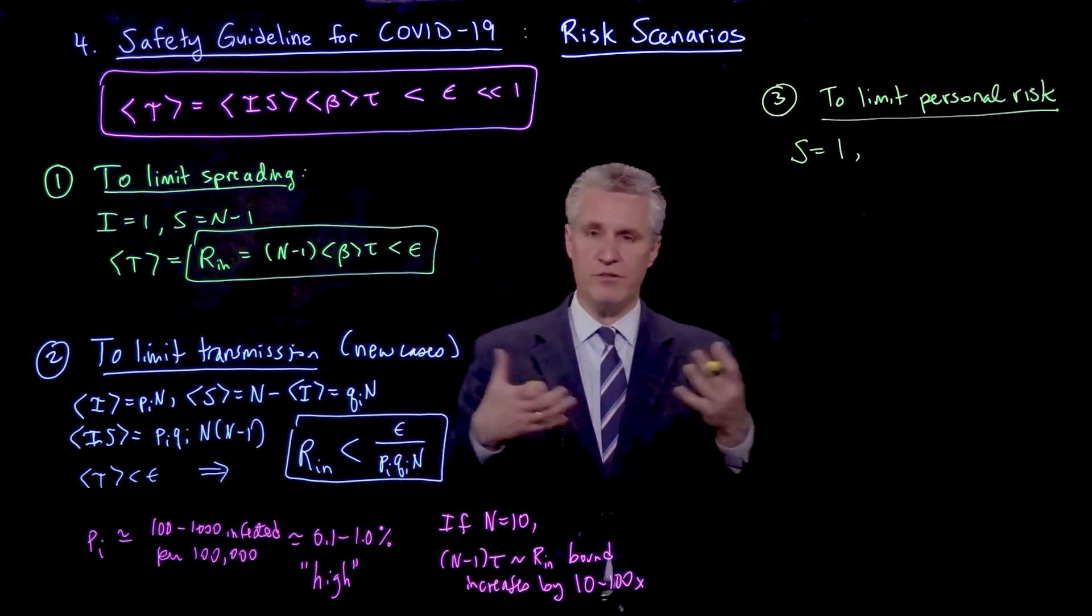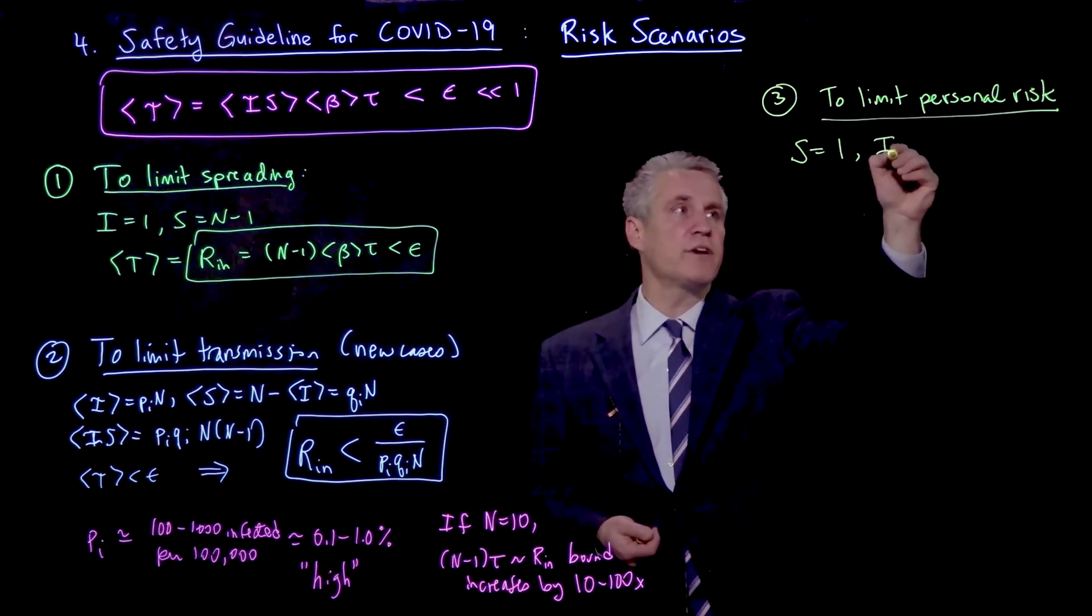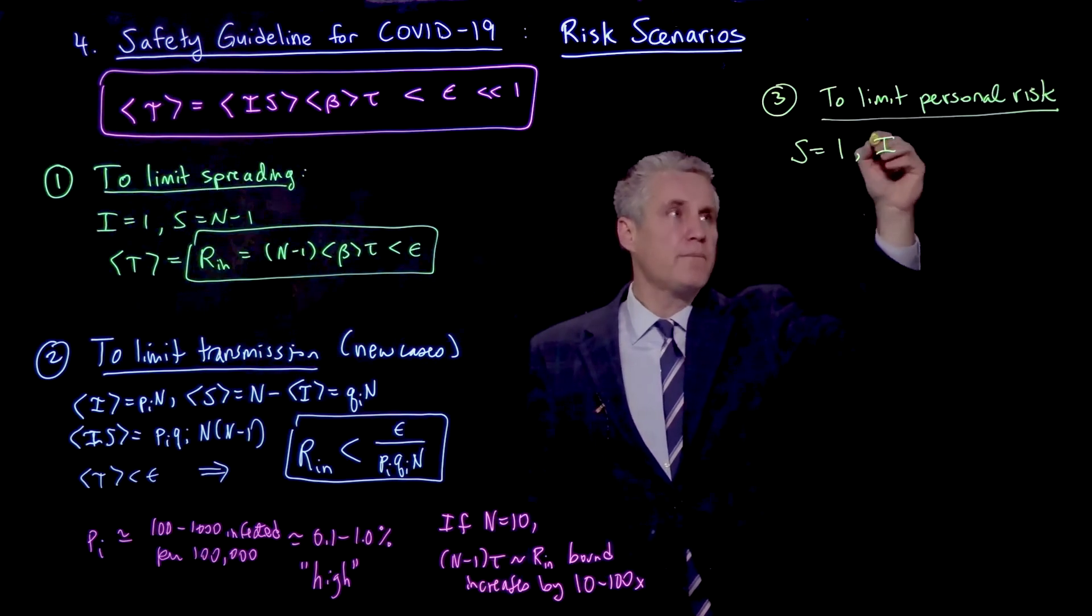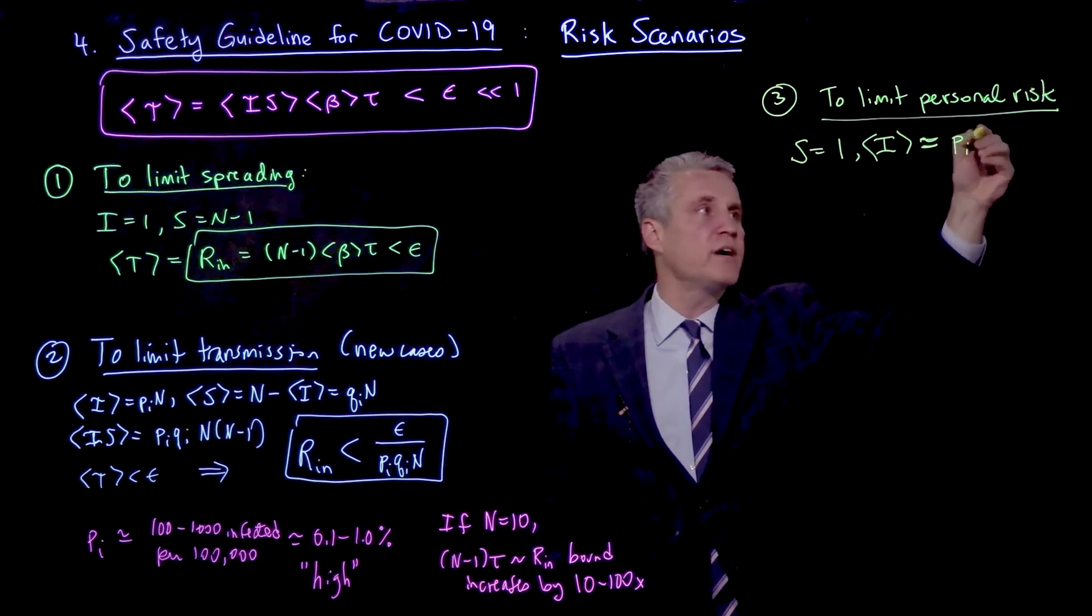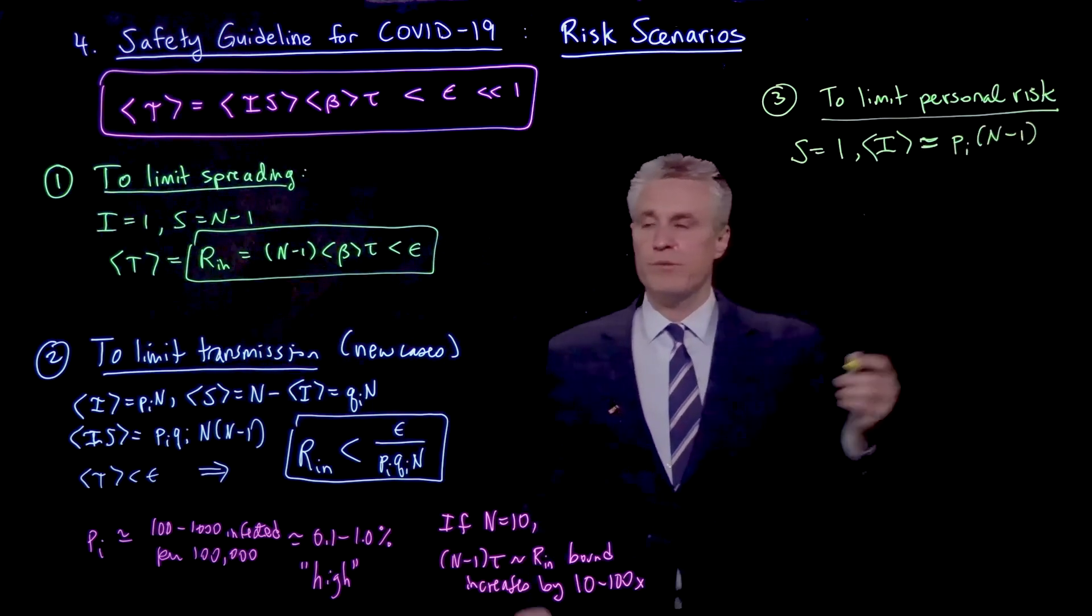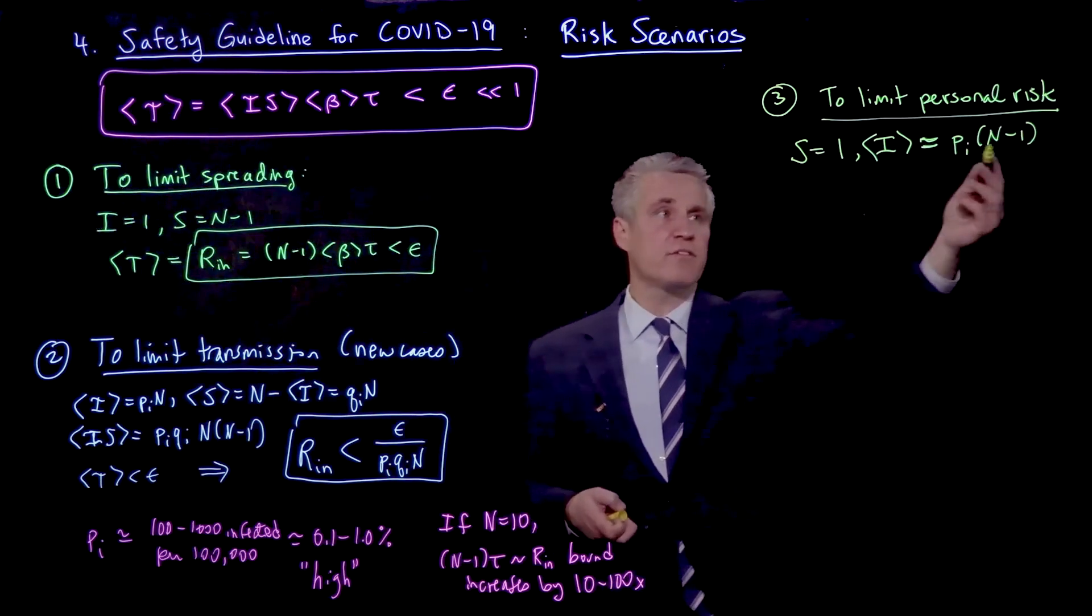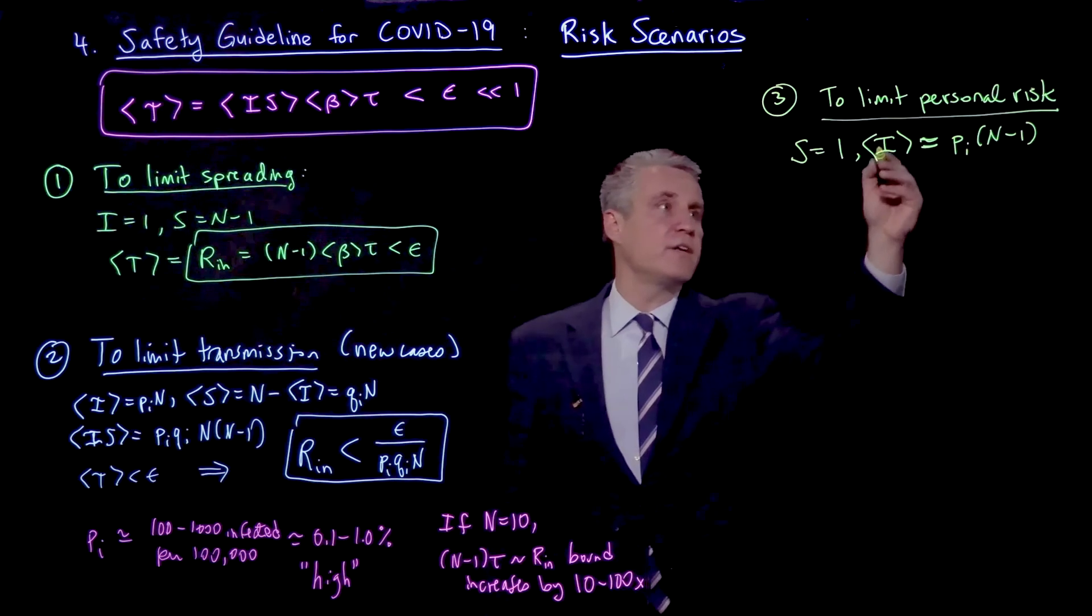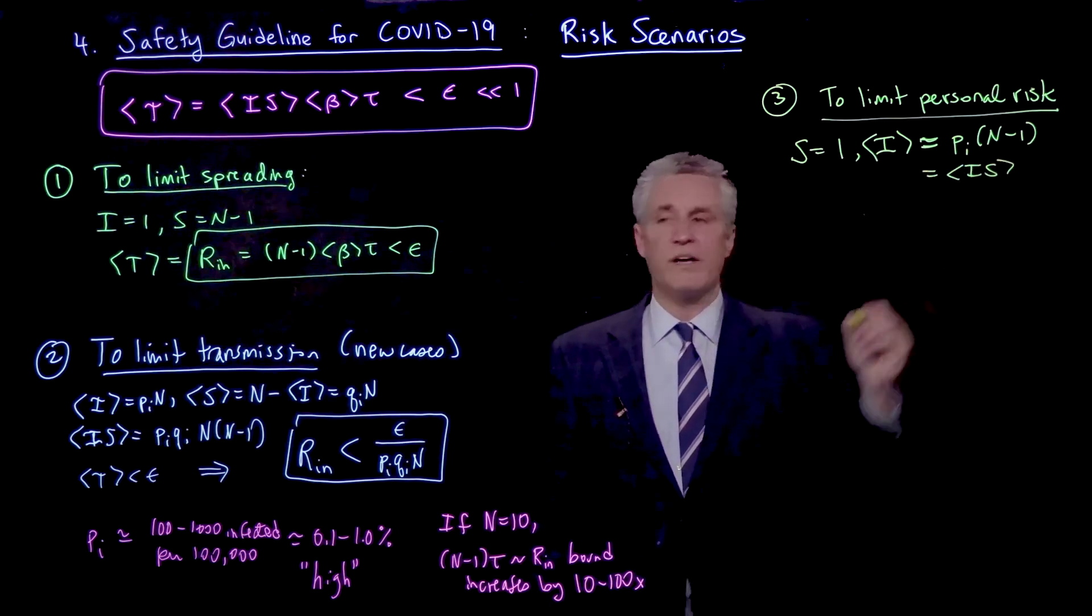And the number of infected people is potentially anyone else in the room. So I'm worried about attending an event or being in an office or some situation where there's a certain number of people. And the number of infected that I would expect would be, the expected number of infected would be exactly equal to pi times N minus 1. So basically, any other person than myself could be infected, and so that's the expected number. And of course if S is fixed at 1, then this expected value of I is also the expected value of I times S.